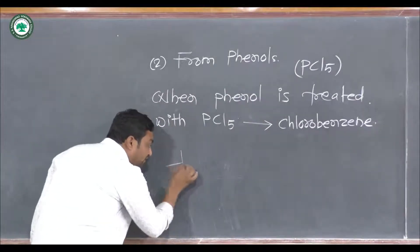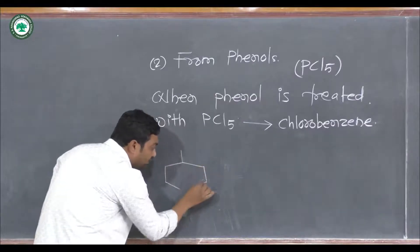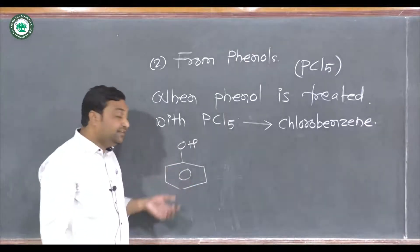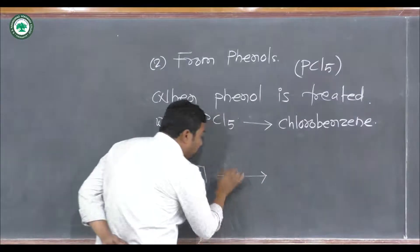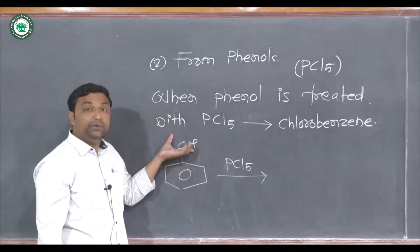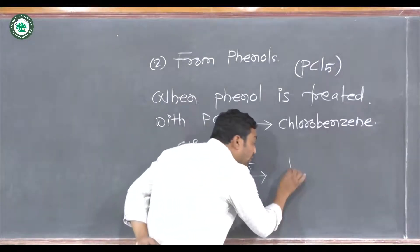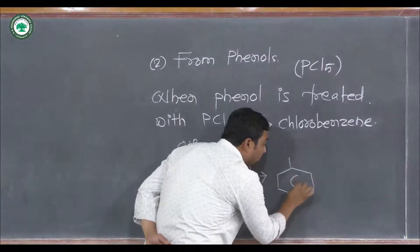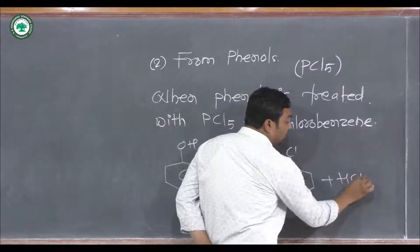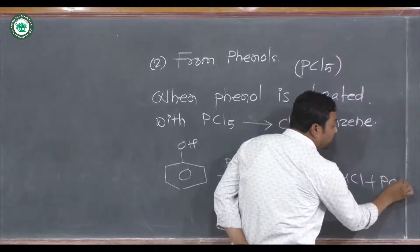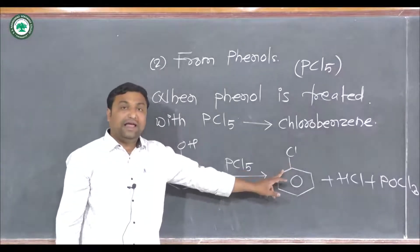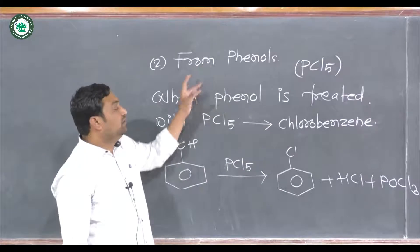The reaction is: when phenol is treated with PCl5, this PCl5 will convert the OH group into a chloro group to give chlorobenzene as a product, with the formation of HCl and POCl3. This is the preparation of aryl halide from phenol.